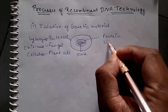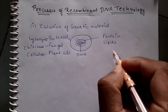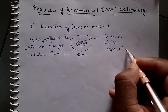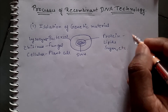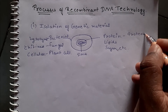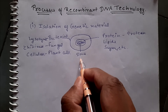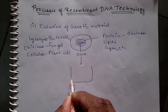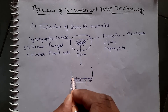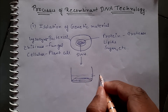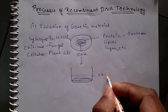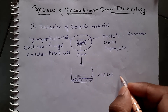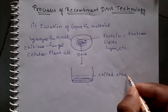we treat the solution with protease and other enzymes that dissolve all these extra materials. For the RNA we treat the solution with RNase, and finally the DNA is isolated, which is precipitated by chilled ethanol. This process involves the dissolution of the cell wall and other constituents of the cytoplasm by different enzymes, and the DNA is isolated with the help of chilled ethanol.